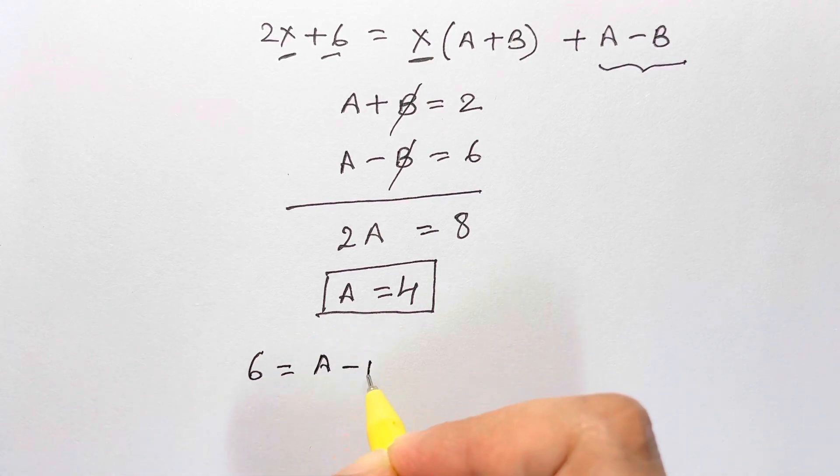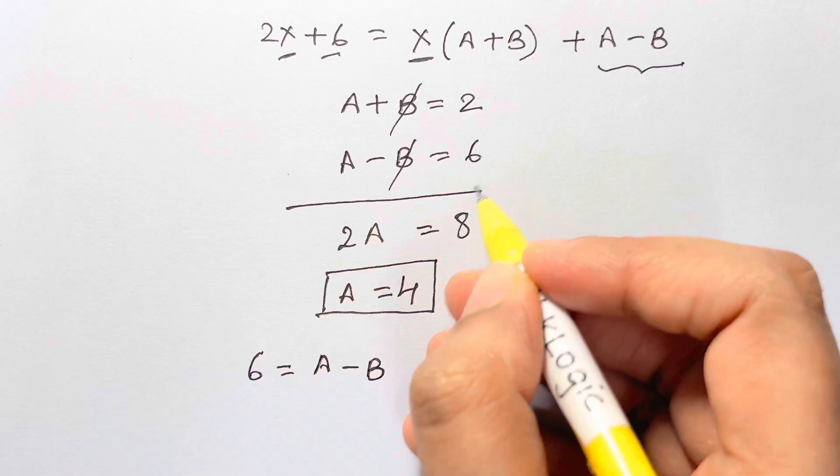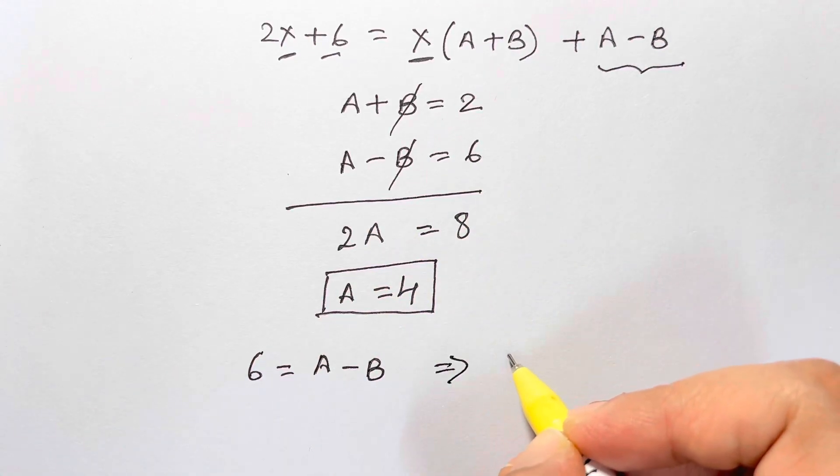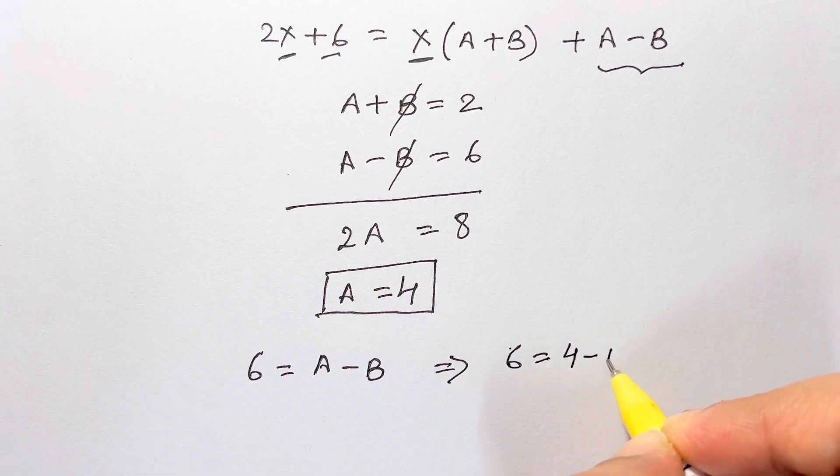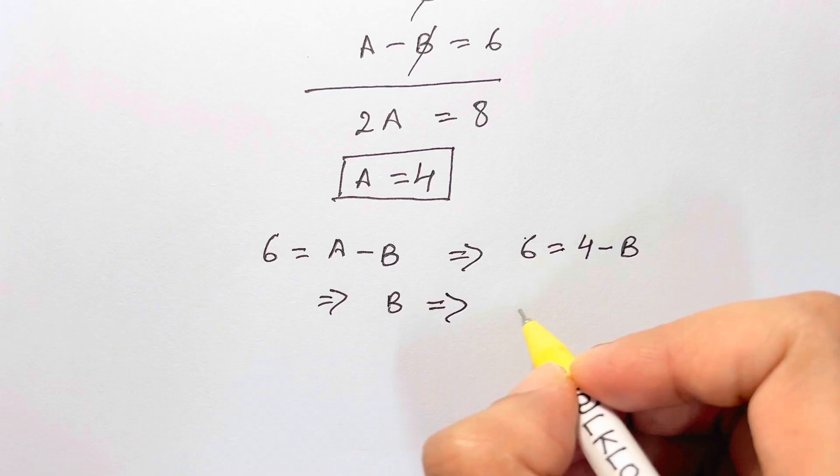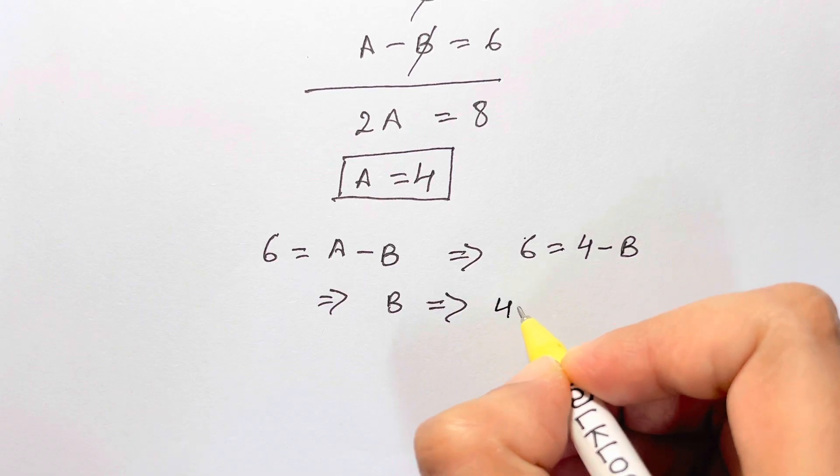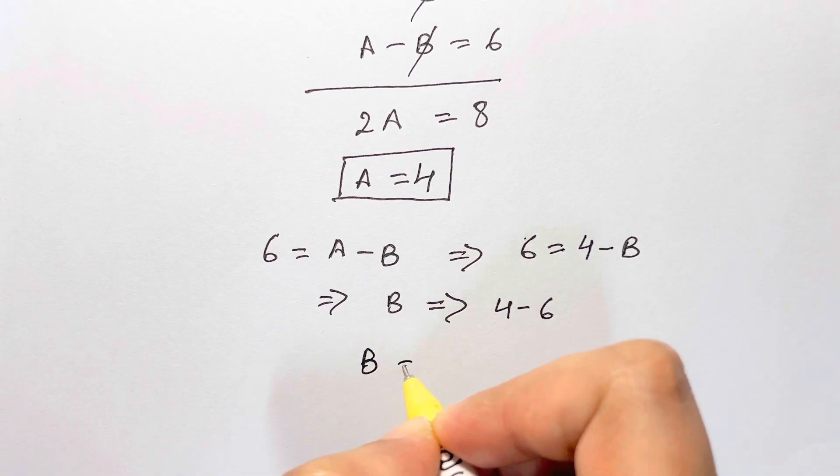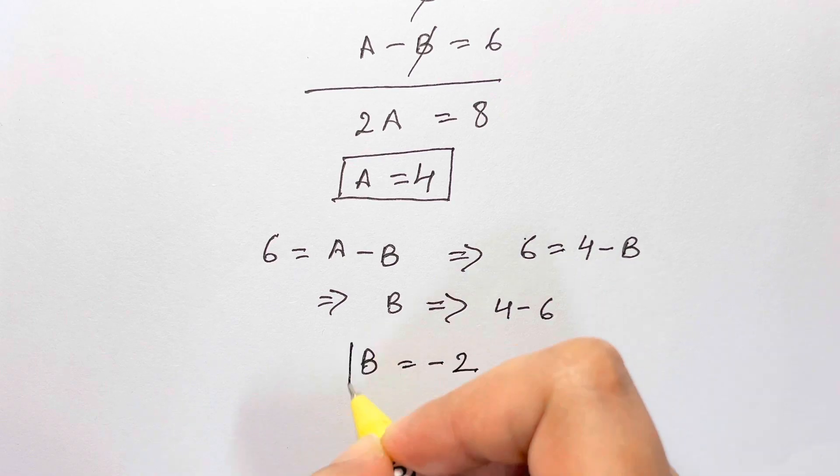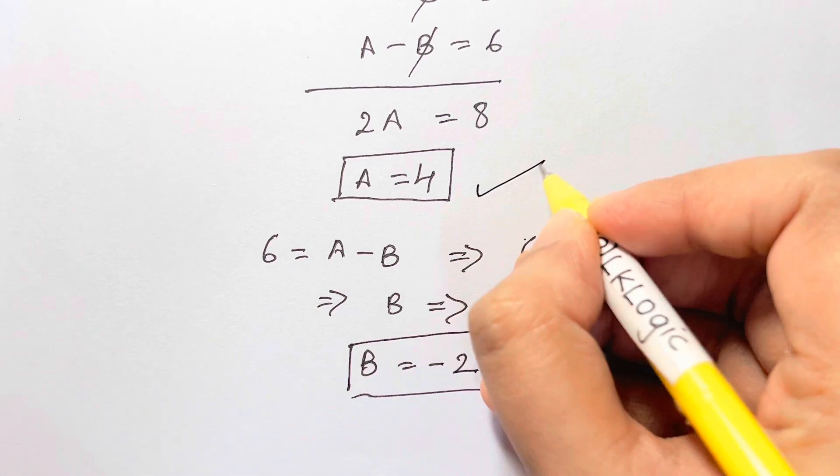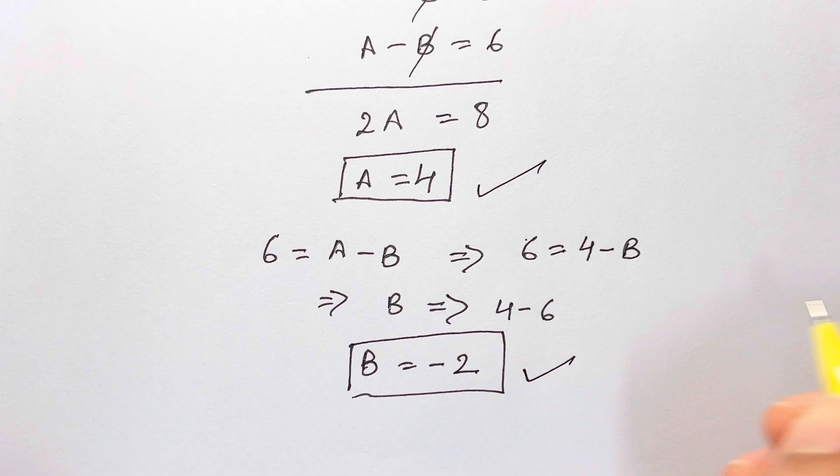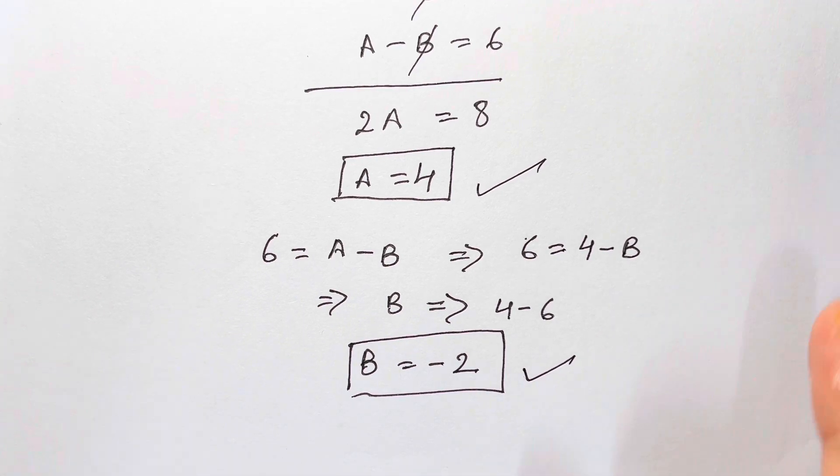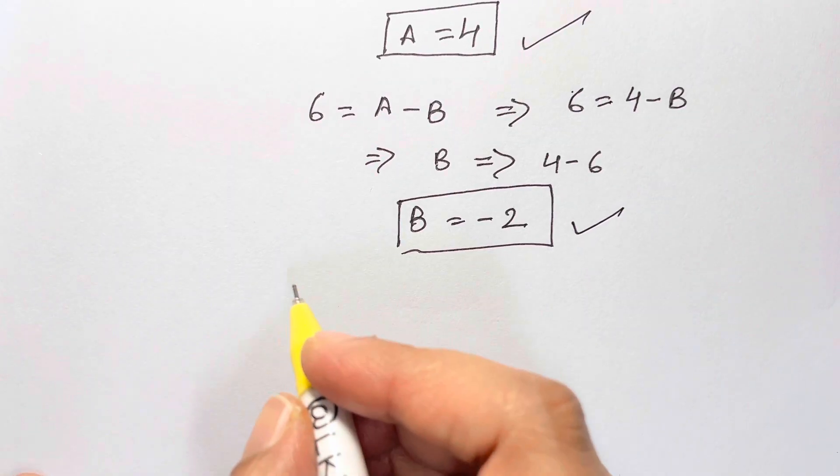Now to find the value of B, just substitute it back in. So if we substitute, we have 6 is equal to A minus B. Let's substitute the value of A: 6 is equal to 4 minus B, so B will be 4 minus 6, so B is equal to negative 2.